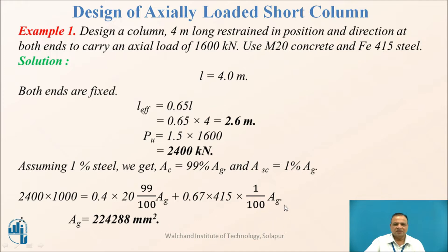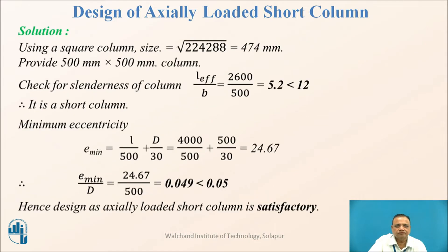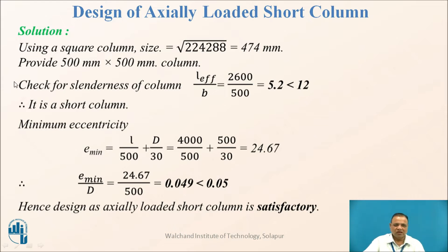With 99% of Ag for concrete and 1% of Ag for steel (yield stress fy = 415 N/mm²), we solve for Ag and obtain the required gross area of cross-section. Using a square column, we take the square root, giving 474 mm. Therefore, provide a 500 mm × 500 mm column.